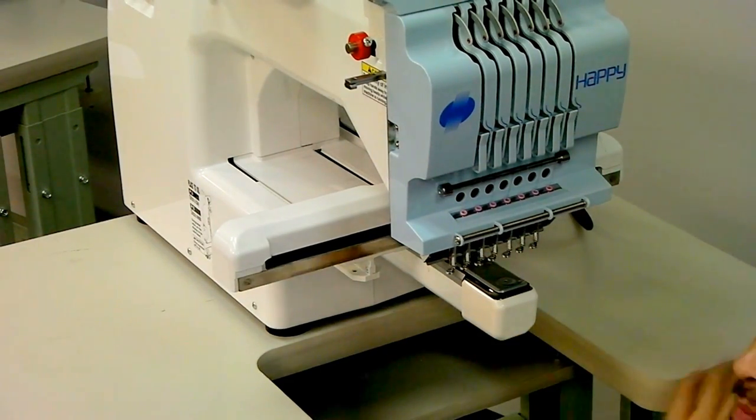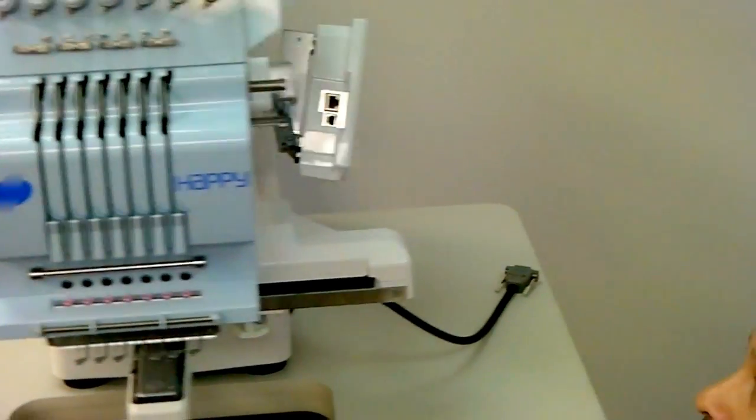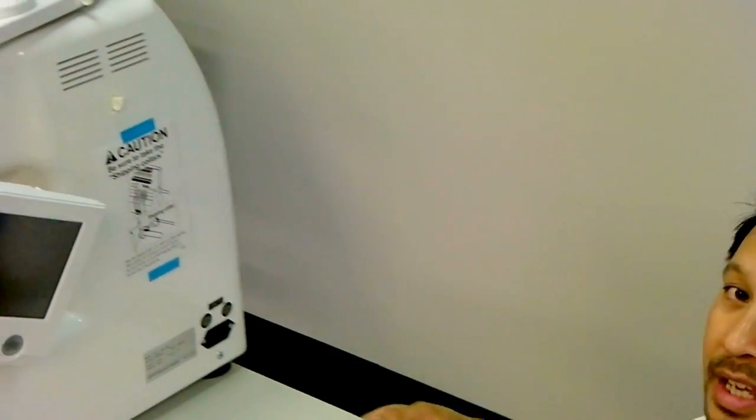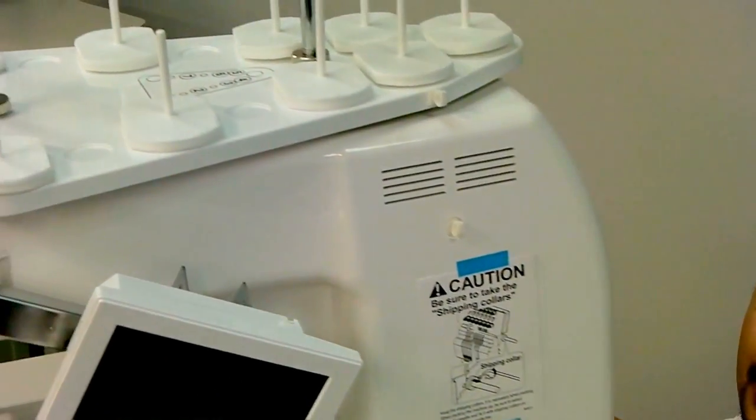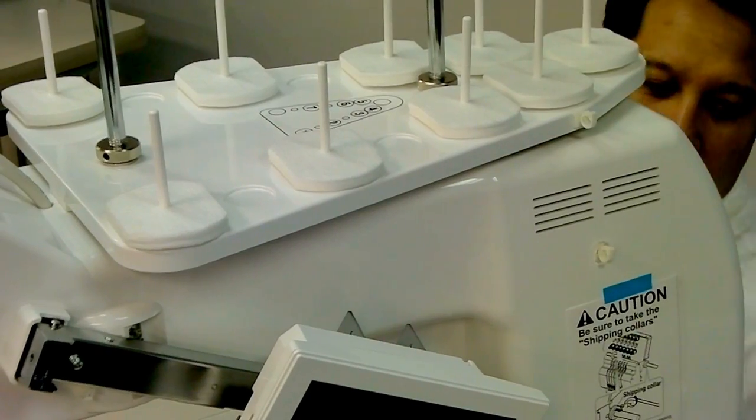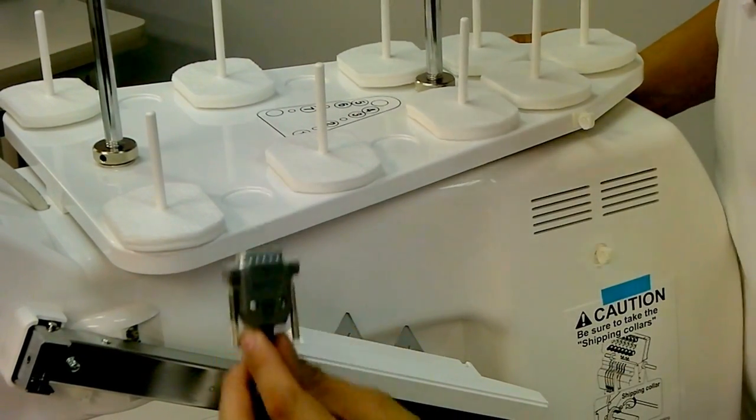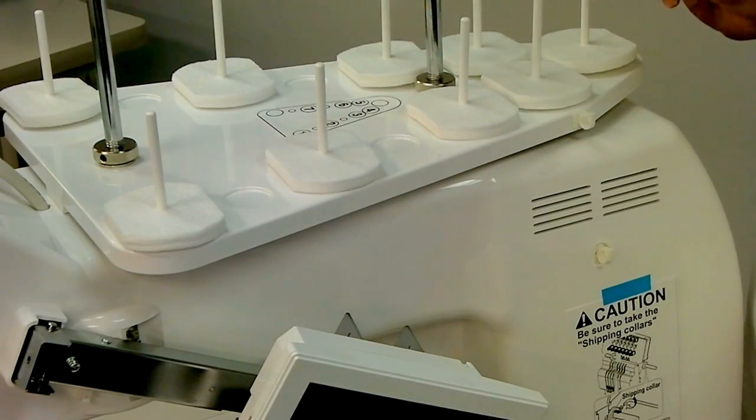And then finally, on the other side of the machine we're going to install the data cable here. That's just a matter of screwing in the two handles here. We'll take the data cable and that plugs into the side of the neck.